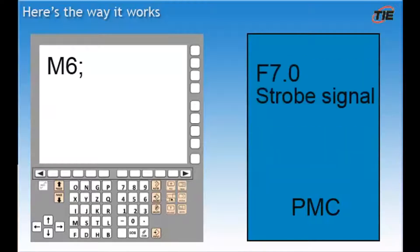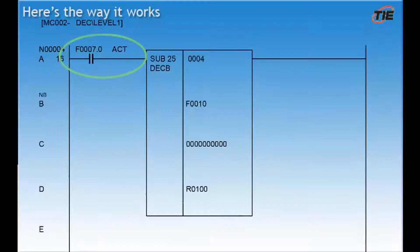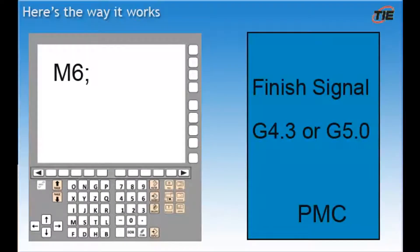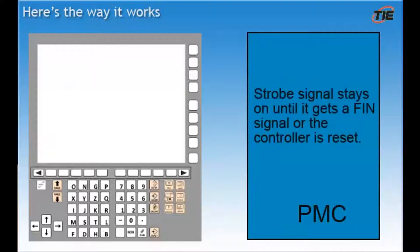The CNC will then send a start signal to the PMC, telling it to read the new M code. This is called the strobe signal. Typically, it's set up as address F7 bit zero. Once the PMC has a start signal, it will do whatever it is it's supposed to do. When it's done, it will send back a signal to the CNC, saying that it's finished. This is the FIN signal. In other words, the tool changer is done. The strobe signal will stay on until it gets the finished signal or the control is reset.